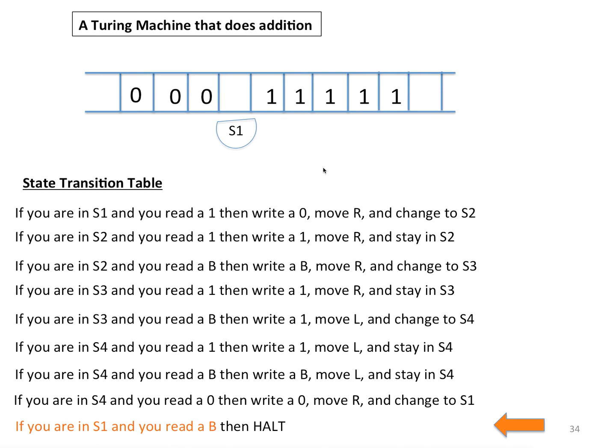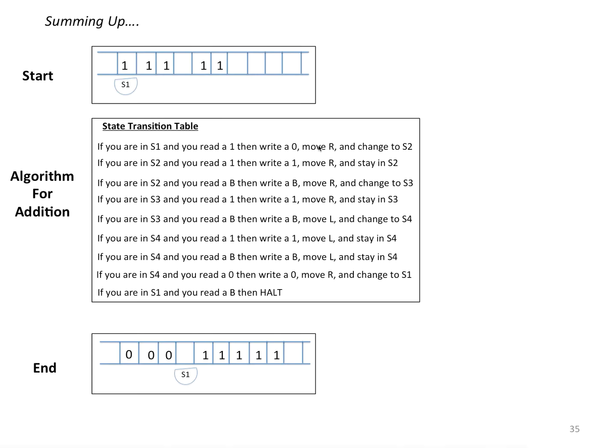Okay, so let's take stock a little bit. Summing up, I started with this setup of the tape. My first number was a quantity of three 1s. My second number was a quantity of two 1s. So that's three, and that's two. I used this state transition table, and this is how the output looked at the end. I have five 1s, a quantity of five 1s over here. So I've got the correct output of five.